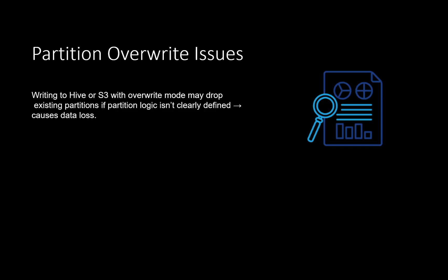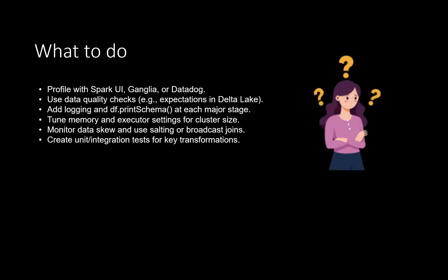To address data integrity issues, we need to profile our data using the Spark UI or tools like Ganglia or Datadog. We should use data quality checks to ensure there are no nulls, and have logging where we print the schema at every major stage. Memory settings and executor settings need to be tweaked based on the data we are operating on. Data skews need to be monitored, and we should consider where to use broadcast joins. Testing is a big part of the development cycle.